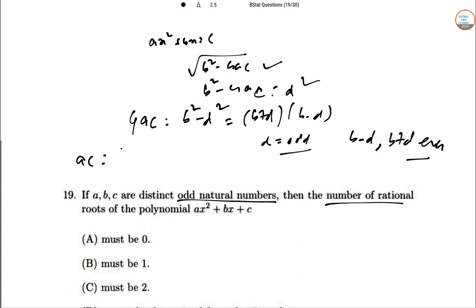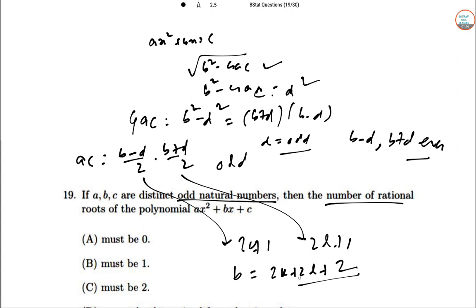Now AC = [(B-D)/2][(B+D)/2], where (B-D)/2 = 2K+1 and (B+D)/2 = 2L+1, both are odd. But B = 2K + 2L + 2, which is not possible. Hence the answer is 0, so there is no rational root.